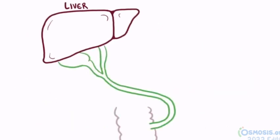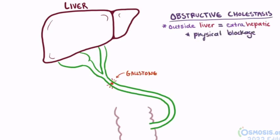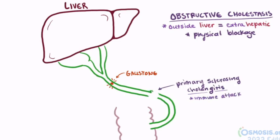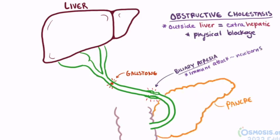The other major type of cholestasis is obstructive, which usually happens outside the liver, so we can call it extrahepatic cholestasis. This is usually a physical blockage of the common bile duct — it could be a gallstone from the gallbladder, or it could be from primary sclerosing cholangitis, where the body's immune system attacks the bile ducts causing inflammation and scar tissue. Biliary atresia is a similar condition but specifically affects newborns. Pancreatic carcinomas growing at the head of the pancreas may also physically block bile flow, since the common bile duct moves through the head of the pancreas.